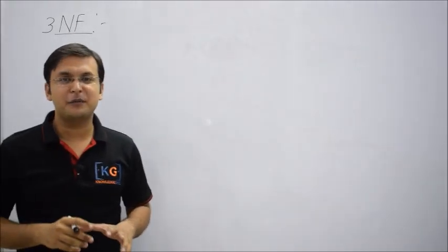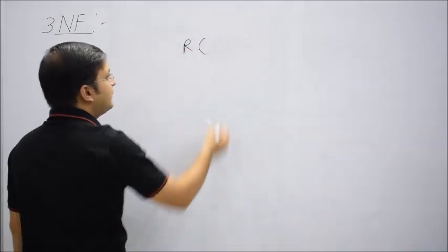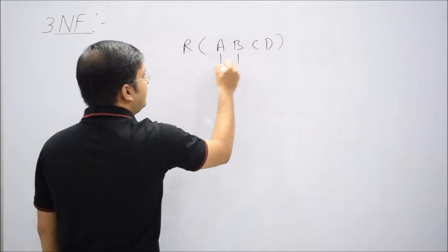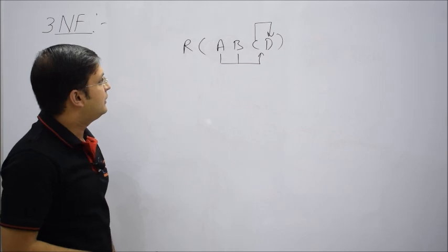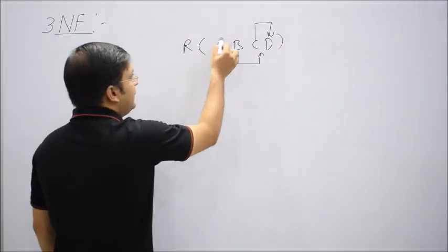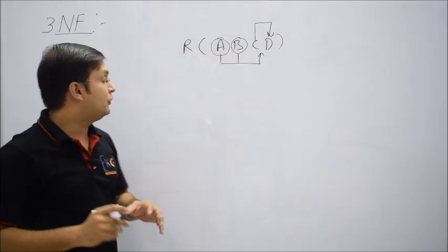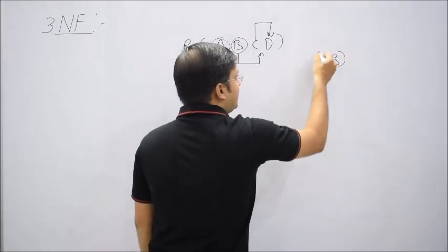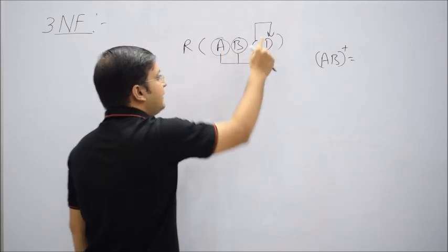Let me discuss the basic idea of third normal form with an example. Consider a relational table R with four attributes A, B, C, D and functional dependencies: A,B → C and C → D. Let me first check what the key is. A and B are essential attributes because there is no incoming edge on them and no other attribute can determine them. So let me check if A,B is a key — from A,B I can find C, and from C I can find D, so from A,B I can find A,B,C,D.